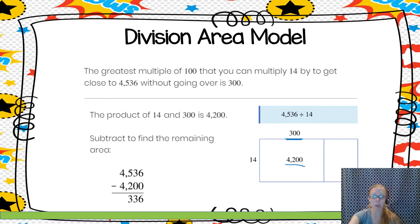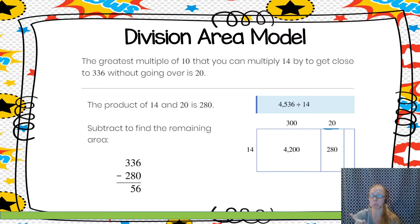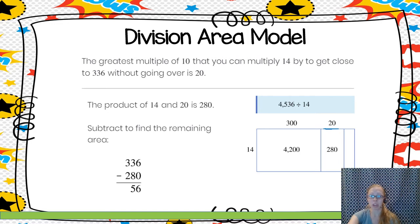I subtract to figure out how much I have left: 336 left. So I go to the next spot in my area model. The next step is to think: 14 times what multiple of 10 gets me close to 336 without going over? The closest is 20. 14 times 20 equals 280. I subtract 336 minus 280 and see that I have 56 left.